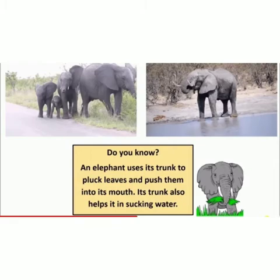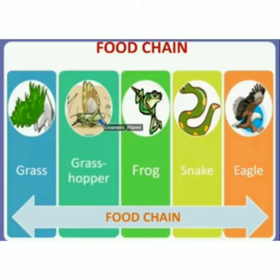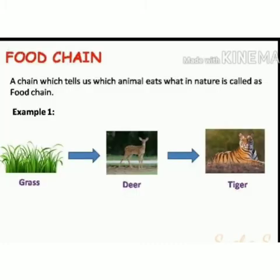The next topic is food chain. Do you know all living things depend on each other for their food? A food chain always starts with a plant. For example, grass is eaten by a grasshopper, the grasshopper is eaten by a frog, the frog is eaten by a snake, and then the snake is eaten by an eagle.